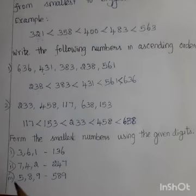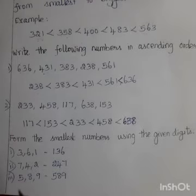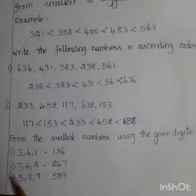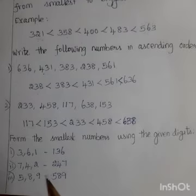Given digits: 5, 8, 9. Which is the smallest number? Number 5. Next 8, next 9. So 589 is the smallest number.